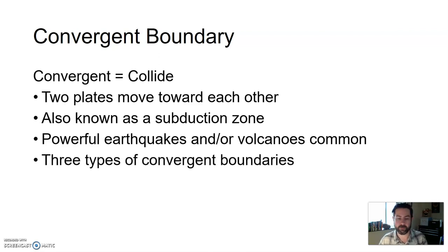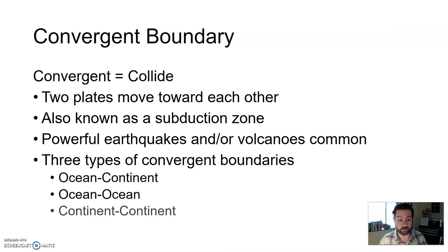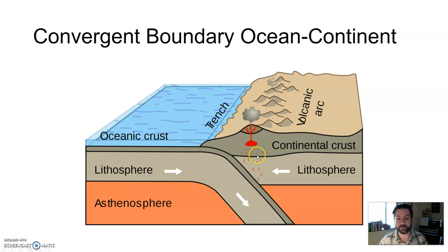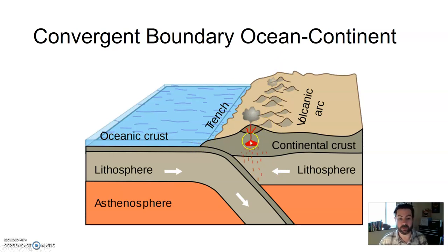There are three types of convergent boundaries: ocean to continental crust, ocean to ocean crust, and continent to continental crust. When oceanic crust is converging with continental crust, we can get volcanoes, arcs of mountain ranges that are typically volcanic, oceanic trenches, and a lot of earthquakes. Typically the oceanic crust gets subducted.